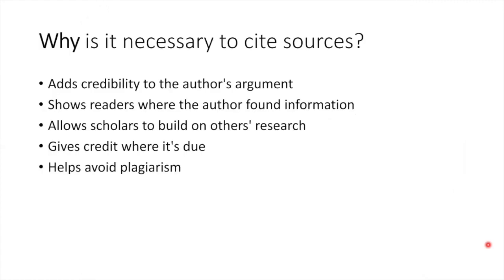Now that we've defined our terms, let's discuss why it's necessary to cite sources. There are many good reasons to engage in this practice. First, citing sources adds credibility to a writer's argument. If you make a claim in a research paper, you'll want to back it up with evidence you found in authoritative sources. Citing sources shows readers where the author found information and allows scholars to build on others' research. If someone who reads your research paper is interested in learning more about the topic, they can use citations to locate the sources you used and develop their own expertise. Likewise, if you find a great article on a topic you're researching, you might want to track down some sources from that article's works cited list. Citing gives credit where it's due — when you use someone else's words or ideas, specifying the source is just the right thing to do. Finally, citing sources helps avoid plagiarism, which is something we all want to steer clear of.